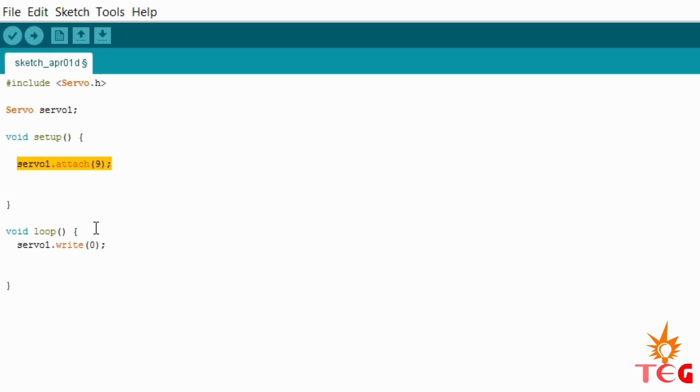Now in void loop, we will define to which degree we want our servo motor to rotate, or to which degree position our servo motor should be. There's a simple command to do that: servo1.write and in brackets the degree to which you want your servo motor to rotate. Like here servo1.write0, that means servo motor will go to its zero degree position. Let's change it to 180 degree and now upload the code.